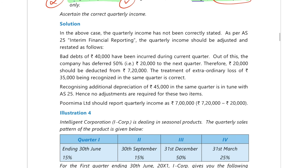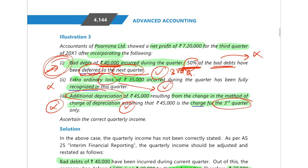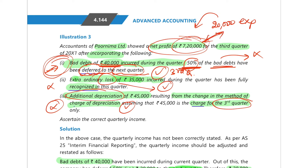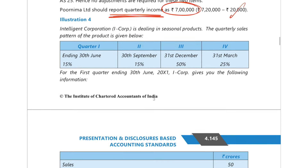Only the first point requires a change. Bad debts total 40,000 — 50% means 20,000 was charged to the next quarter but should be charged in this quarter itself. So 20,000 must be deducted from the profit of 7 lakh 20 thousand, giving a corrected quarterly profit of 7 lakh rupees.